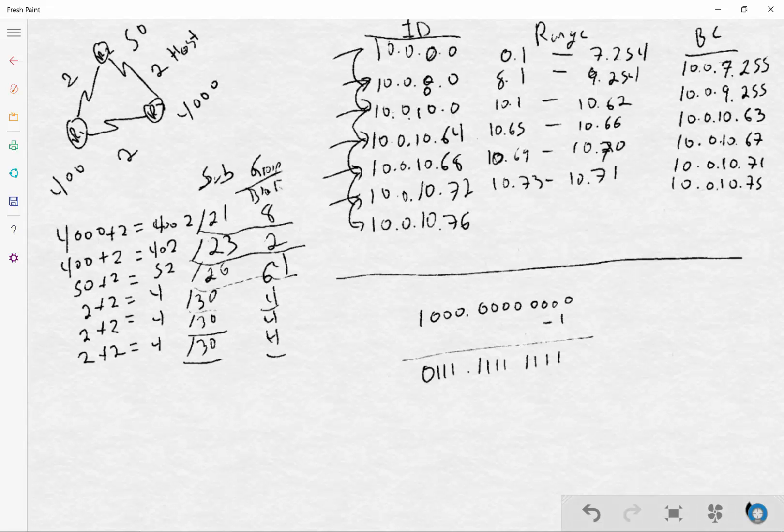And that fills everything. Anything above this 10.0.10.76, we use for growth. Later down the line. And essentially, this is our basic variable length subnet problem. This is a little intimidating the first few times, but it does get easier. Thank you.